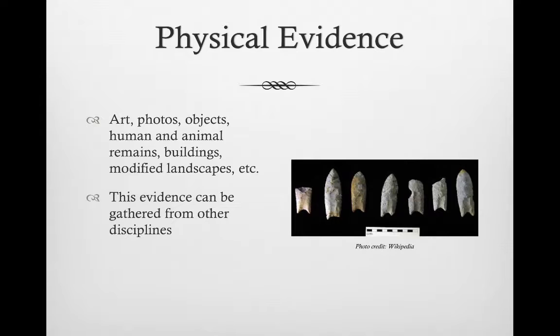The sciences have been increasingly helpful to historians for determining dates, with things like radiocarbon dating, or past environments, like the use of dendrochronology, which is the study of tree rings to determine age and environmental conditions. These disciplines help historians piece together more about the past.